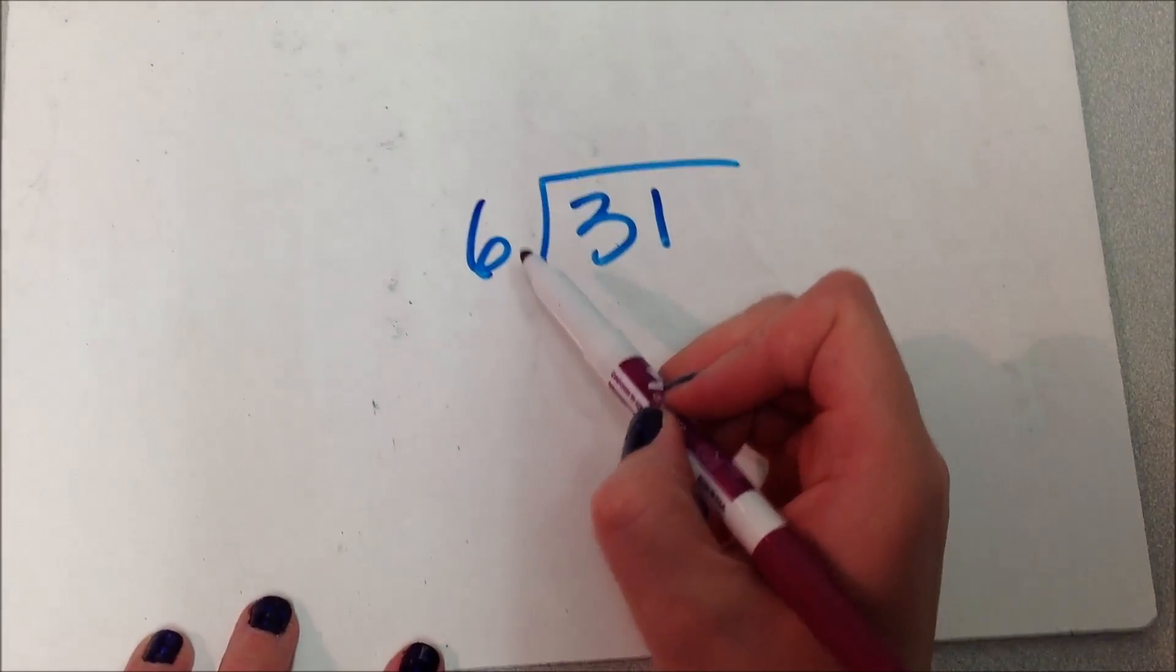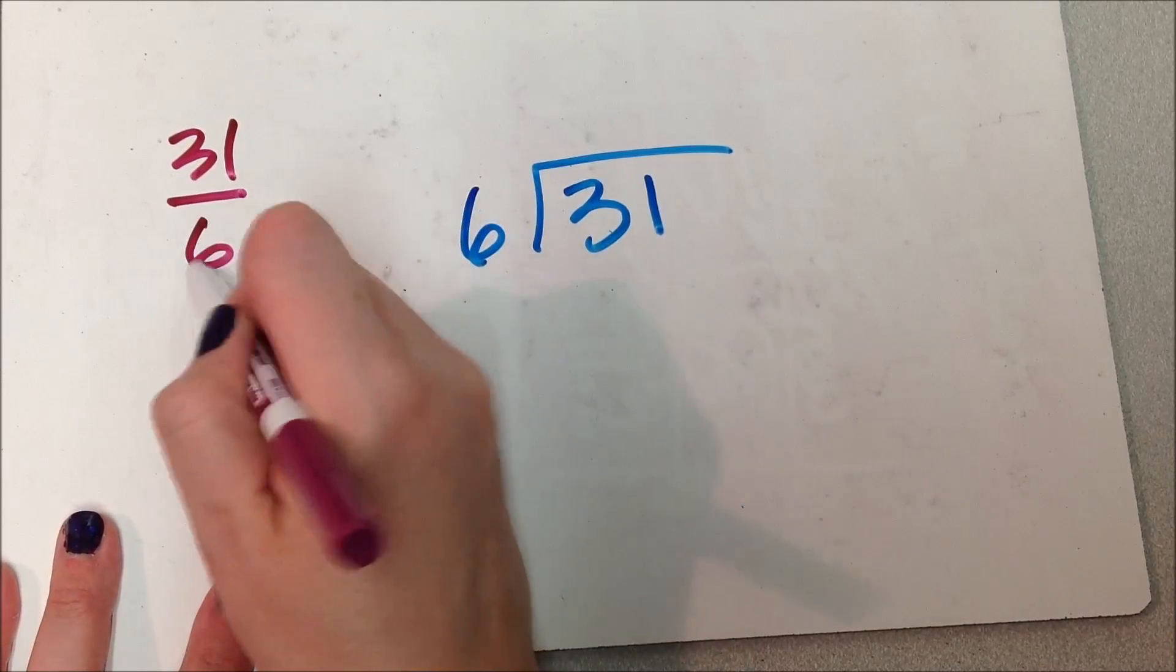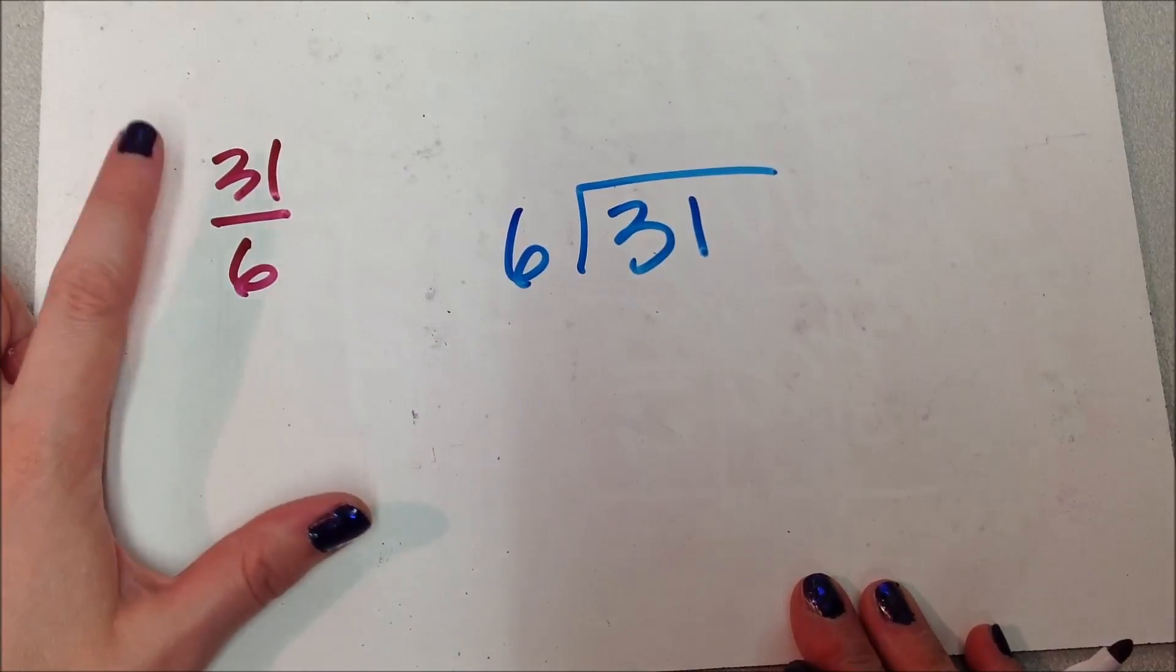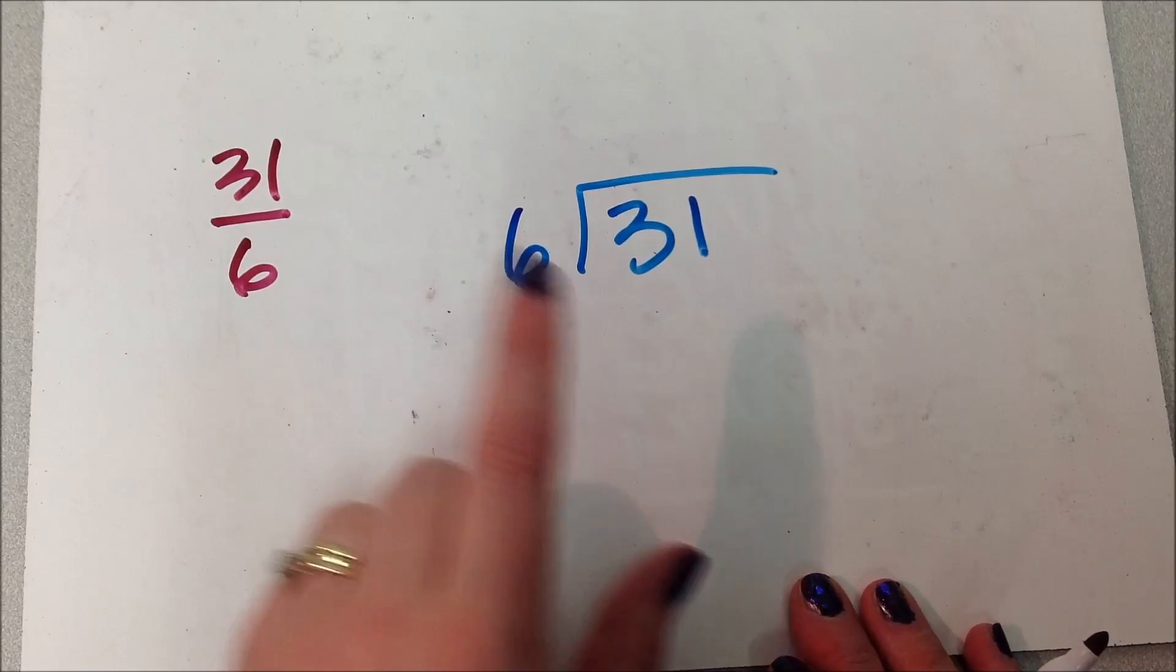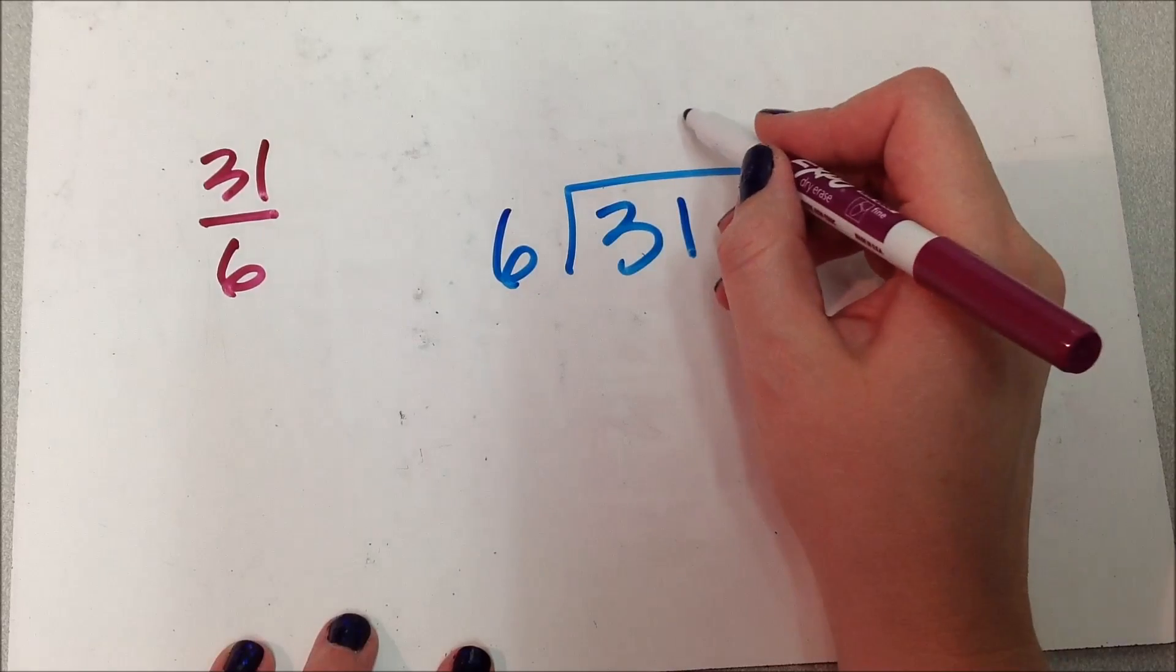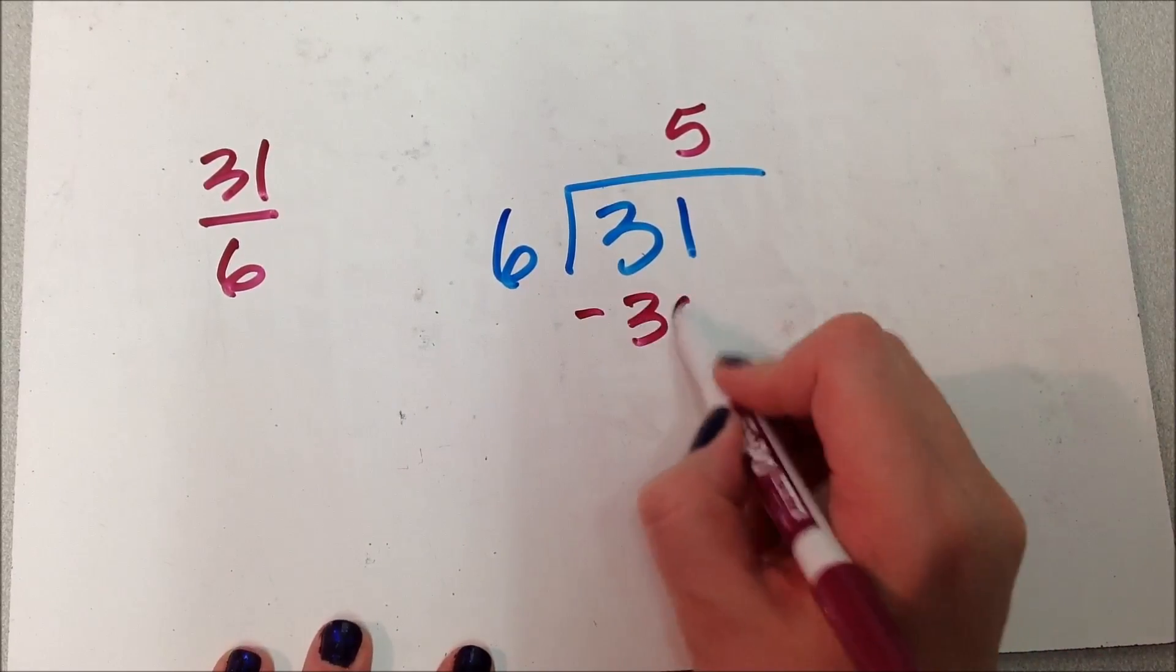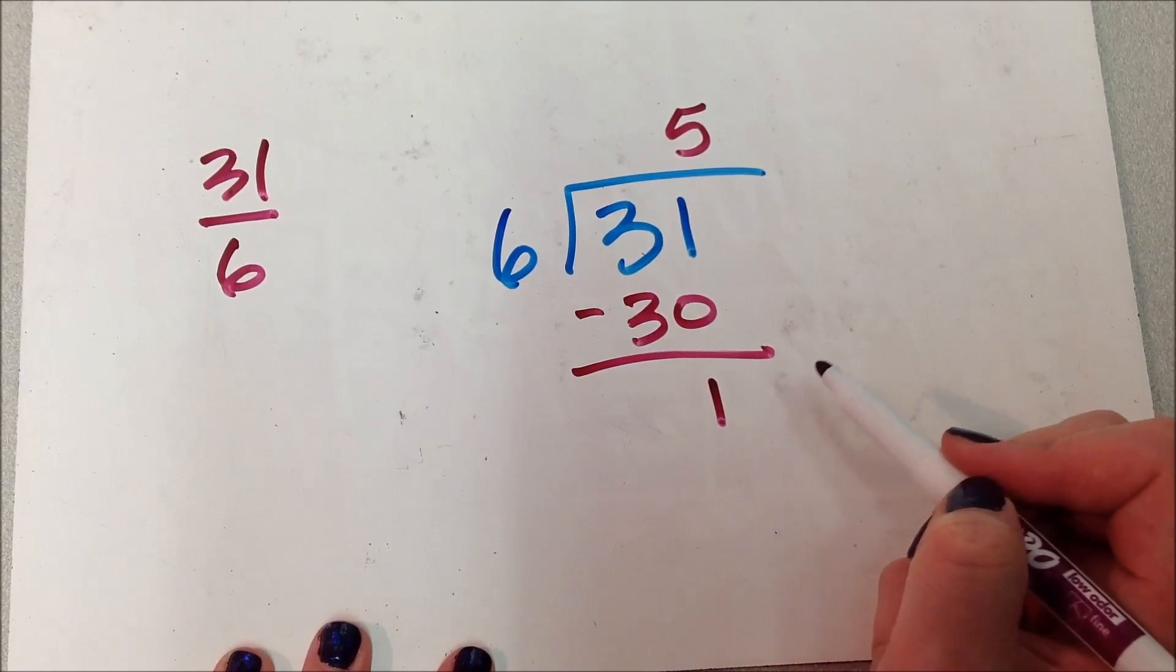So if I was going to solve this problem, like say it was this, right? This was a fraction, an improper fraction. I have to convert it into a mixed number. I just go like this. Okay, so I go 6 can go into 31, I can go 5 times, 30, I have 1 left over.